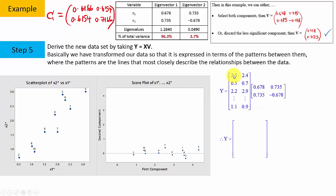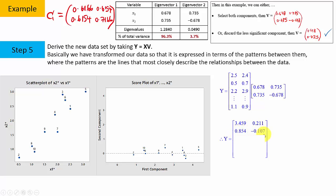Multiplying row by column, the first set of original data points after transformation becomes the new set of data points, which we call scores. The first set of scores has values 3.459 and 0.211. For the second original data pair, taking the row multiplied by each column gives the second transformed data pair. So the second data pair, which was here before transformation, is now at a new position after transformation. This can continue for all 10 data pairs.